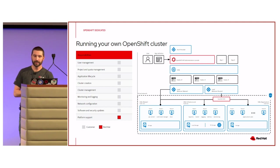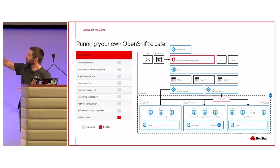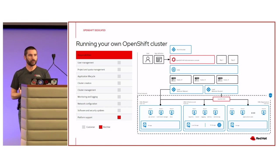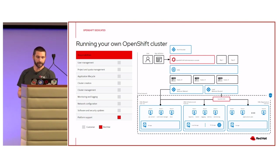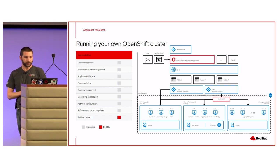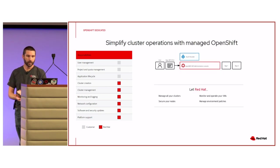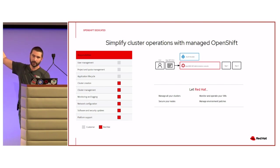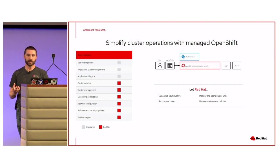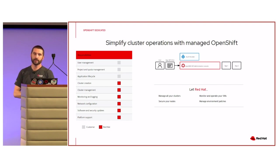This may look familiar. If you have OpenShift in your environment, this is a rough topology. You can see there are gray boxes beside most of the items at the top — those are the things you're responsible for in a normal self-managed OpenShift environment: user management, quota management, cluster creation, cluster management, logging and monitoring the cluster, network configuration, and software and security updates. Red Hat is obviously there to support the platform.